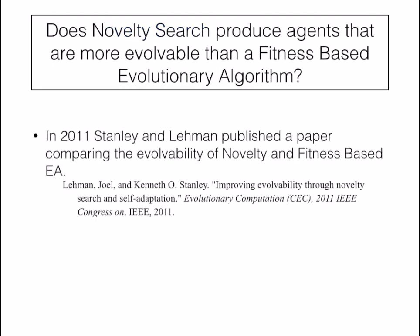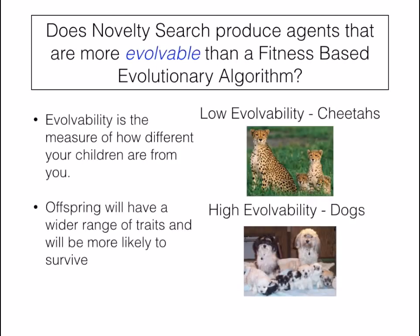In 2011, Stanley and Lehman published a paper comparing the evolvability of NoveltySearch and fitness-based EA. Evolvability is a measure of how different your children are from you. For example, cheetahs have very low evolvability — nearly every cheetah is the same as every other cheetah. Whereas dogs have very high evolvability; even within a litter of puppies, you can have dogs with different coloration or different physical features. Offspring with a wider range of traits are more likely to survive, since a disease affecting one cheetah will likely affect all cheetahs, but a disease affecting one group of dogs is unlikely to affect all dogs due to their high diversity.